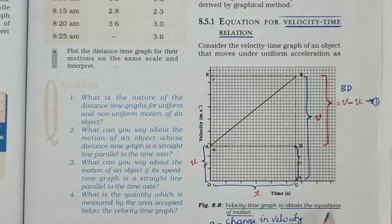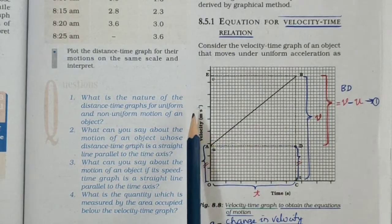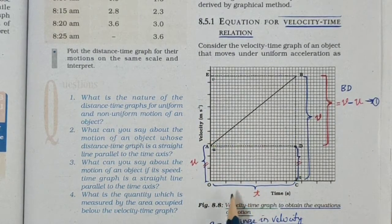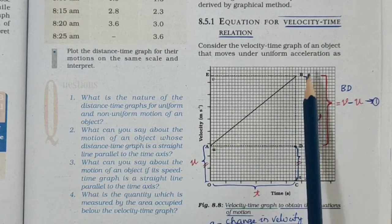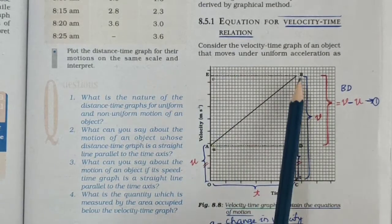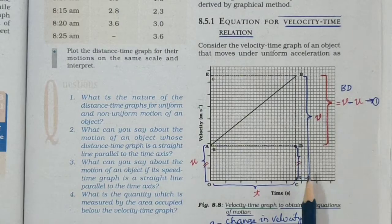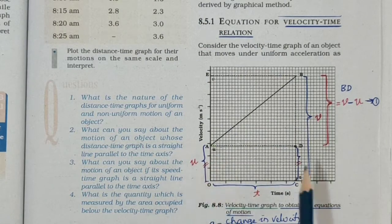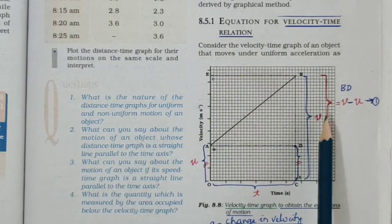Using the velocity-time graph to obtain the equations of motion. In the y-axis we have plotted velocity in meters per second and in the x-axis we have plotted time. If you take the vehicle moving from A to B, then A represents the initial velocity u, and B represents the final velocity v. The corresponding points show OA and DC as initial velocity u, and BC as final velocity v.